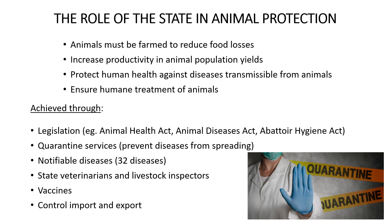Secondly, quarantine services must be enforced if there are notifiable diseases anywhere, to prevent the spread of diseases. Thirdly, notifiable diseases — those very dangerous for both animals and humans — there are around 32 that must be notified in our country. State veterinarians and livestock inspectors must be present to inspect livestock on farms, and vets should help treat farmers' animals. Vaccines should be available to prevent diseases, and lastly the government can control the import and export of all livestock to prevent disease spread and ensure animal and human health.